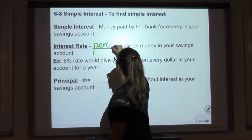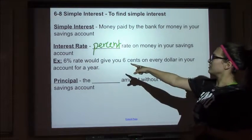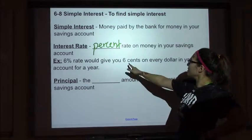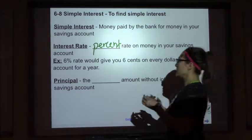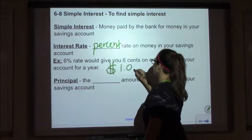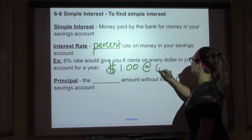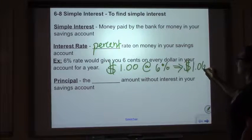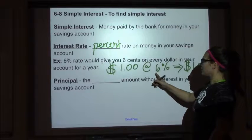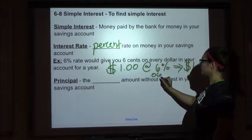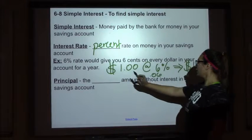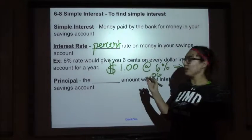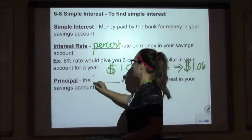For example, if a bank were to give you a six percent rate, for every dollar you had you'd get six cents. So if you had a dollar in there at six percent interest, you would get a dollar and six cents, because six percent can also be written as the decimal 0.06. We multiply that by one and get 0.06, so it would be a dollar with 0.06 added on.